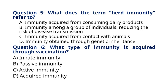Question 6. What type of immunity is acquired through vaccination? A. Innate immunity. B. Passive immunity. C. Active immunity. D. Acquired immunity. The correct answer to question 6 is option C, active immunity. Vaccination triggers the body to produce its own immune response, leading to the development of active immunity against specific pathogens.